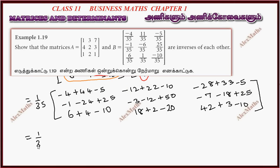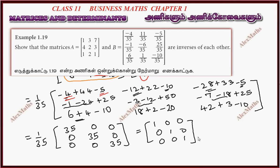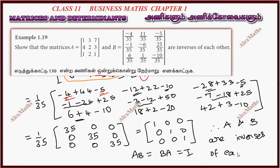After further simplification, we get 1 by 35. We got 35 and minus 22 plus 22 equals 0; minus 33 plus 33 equals 0; minus 25 plus 25 equals 0; minus 25 plus 25 is 0; 10 minus 10 is 0; total is 35 divided, giving 1, 0, 0, 0, 1, 0, 0, 0, 1. Since A into B and B into A both equal the identity, therefore A and B are inverses of each other.